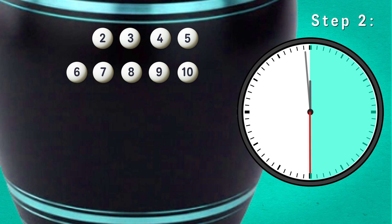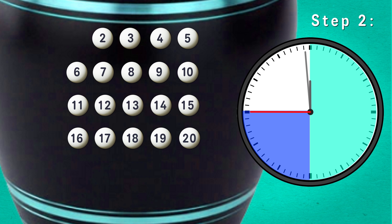Step two, one quarter minute before noon, place balls 11 through 20 in the urn and remove the lowest numbered ball, ball number two.